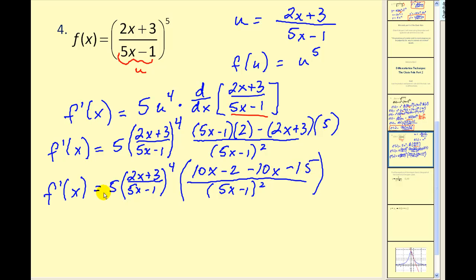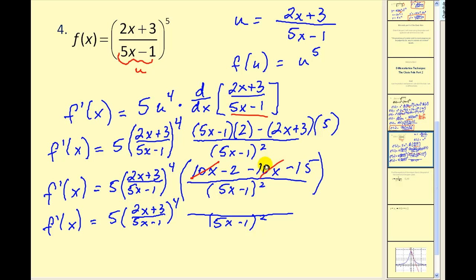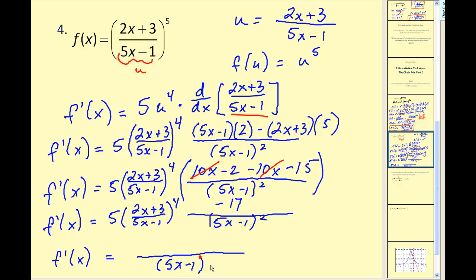We need to simplify one more time. We have 10x minus 10x, so those simplify out. Our numerator is going to be negative 17. Multiplying the factors together: we have 4 factors of 5x minus 1 from the denominator squared and the u to the fourth, plus 2 more, so our denominator is 5x minus 1 to the sixth power. Our numerator is 5 times negative 17, which gives us negative 85, times 2x plus 3 to the fourth power.